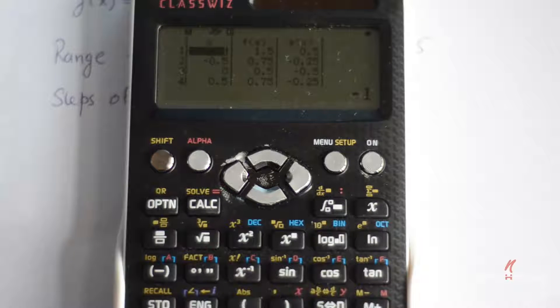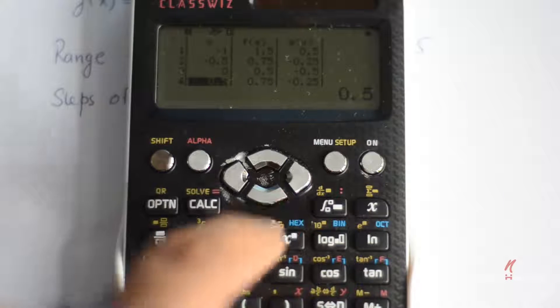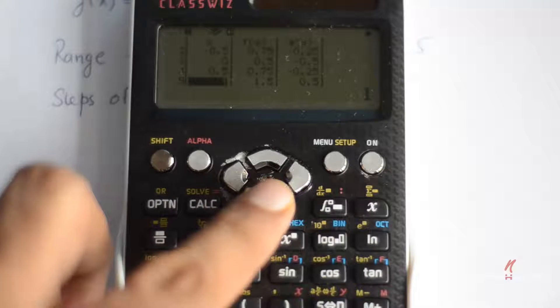So it is plotting me a table starting from -1 to -0.5 to 0 to 0.5 and 1.